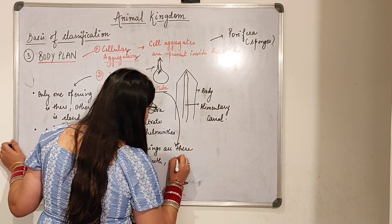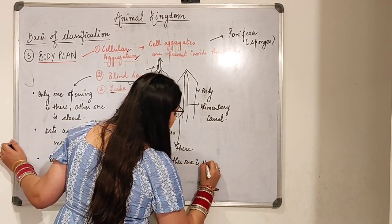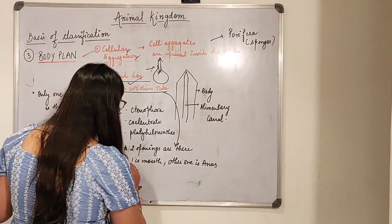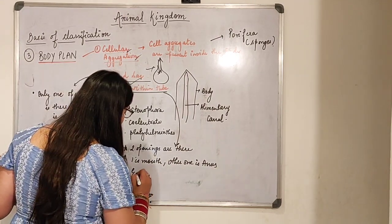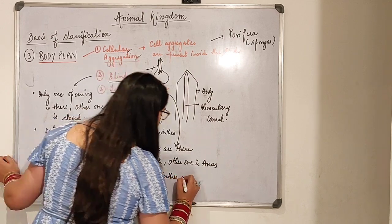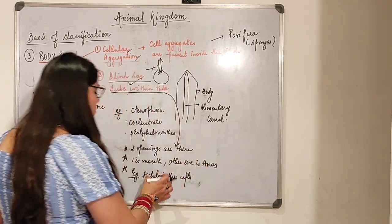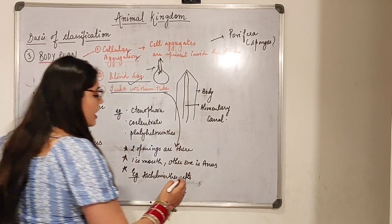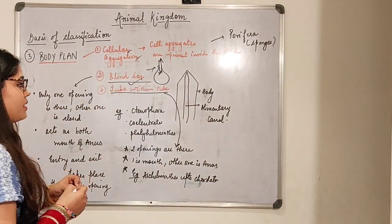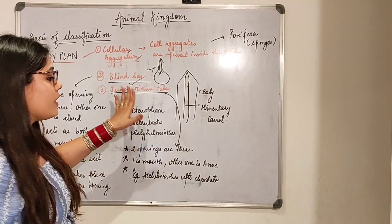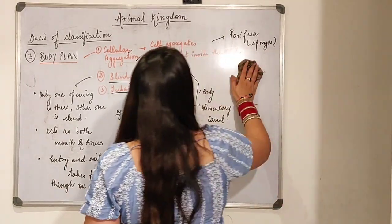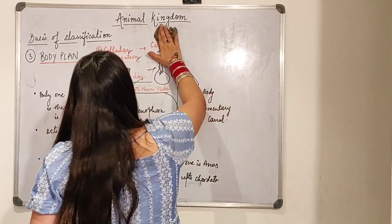In tube within tube, one opening is the mouth and the other is the anus. Examples range from Aschelminthes up to Chordata — all phyla between Aschelminthes and Chordata fall in this category. Tube within tube is further divided into two groups.